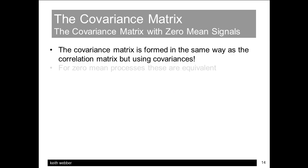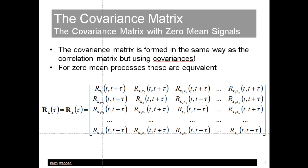The covariance matrix is similar to the correlation matrix, but with auto and cross-covariances instead of correlations. However, as we'll concentrate on zero-mean processes, they are identical.